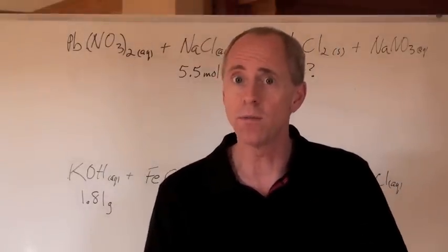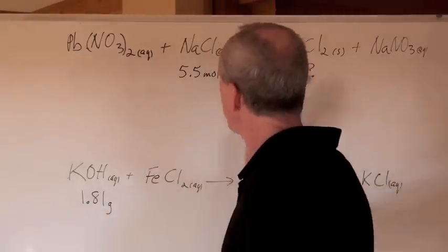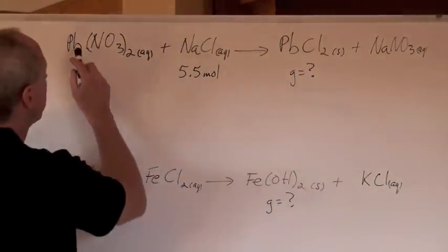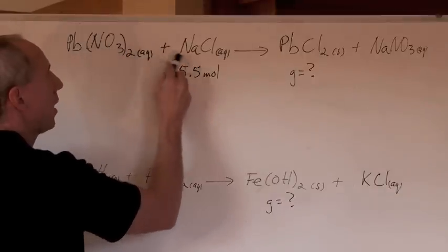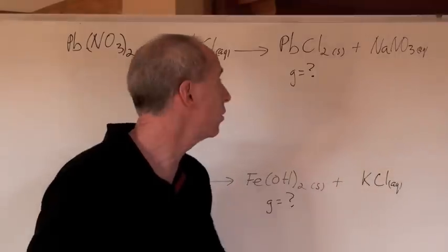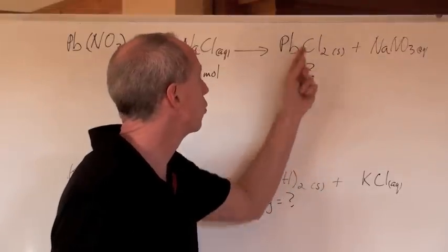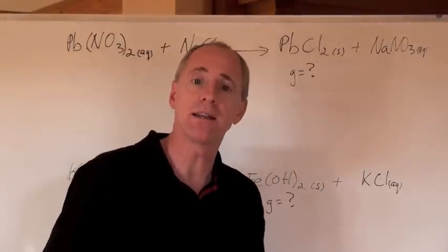Okay, now let's do some stoichiometry where mass is involved. Here's an equation where we've got some lead-2 nitrate in solution reacting with some sodium chloride, and we have a quantity of sodium chloride, 5.50 moles. Here's the reaction that occurs. What is the mass of precipitate that can form?